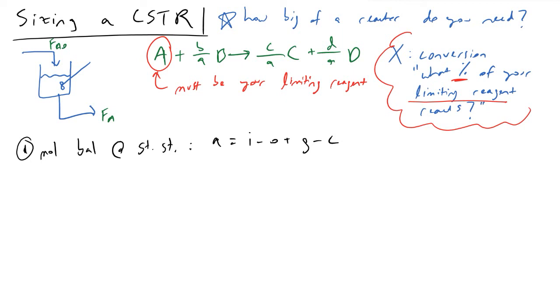Another term that we're going to be looking at later on is called conversion. To give a brief definition, conversion is essentially the percentage of your limiting reagent that has actually reacted inside of your reactor. As we know from chemistry, we don't always get 100% conversion, and so x tells us how much of our reactant actually will react in our process.